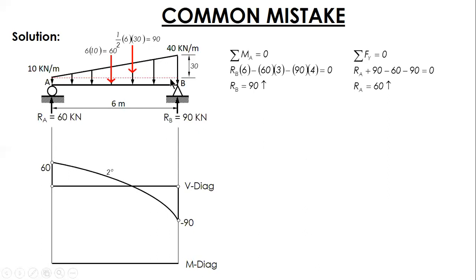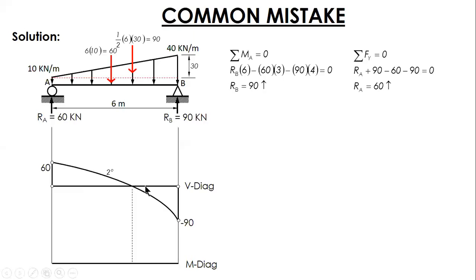By integration, as I explained in a previous video, we increase powers of the variable: first degree becomes second degree for shear, and second degree becomes third degree for moment. Our main objective is to get the maximum moment. We need to solve for x, the location where shear is zero, so let's draw that line.